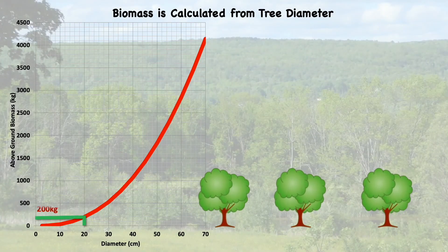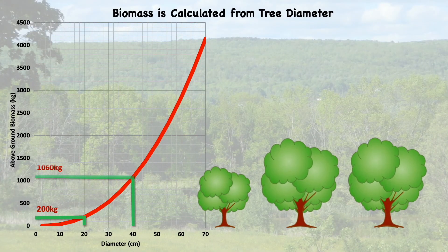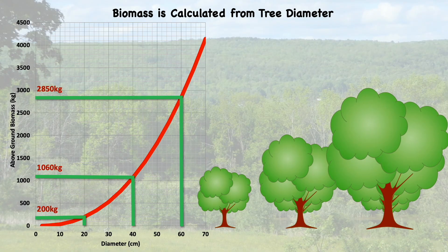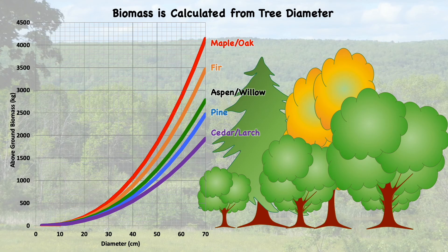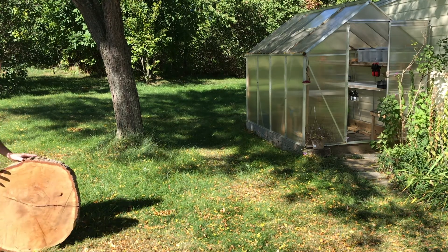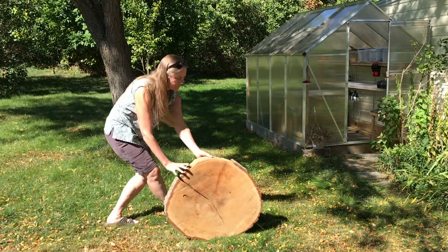Here's a graph of the relationship between a tree's diameter and its mass. As you might expect, the relationships are a little bit different depending on the species of tree. We can't measure diameter directly, so we measure the circumference and use the relationship between the perimeter of a circle and its diameter to calculate the diameter.